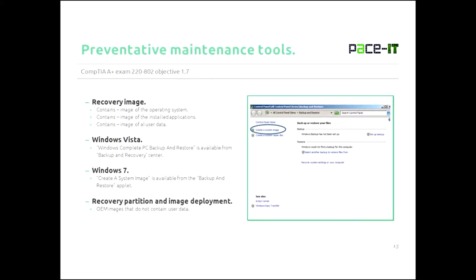Now let's talk about recovery images — this is another form of backup. Recovery images can contain the image of the operating system, they may contain an image of all the installed applications, and they may contain an image of users' data. You get to choose what the image contains.